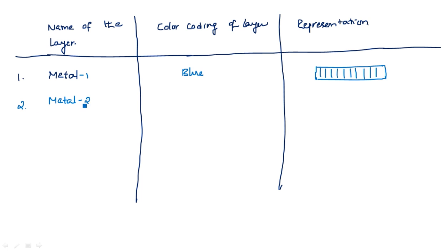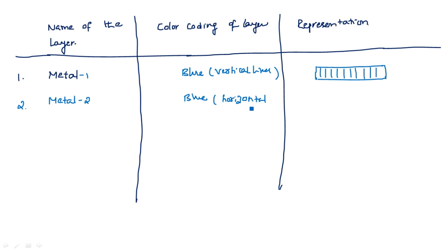The second is Metal 2, and we have metals up to Metal 7 or 8. What is the difference between Metal 1 and Metal 2? Metal 1 has very low resistance compared to Metal 2. Likewise, each metal has different resistance and capacitance values. Metal 1 is represented in blue color with vertical lines, and Metal 2 is in blue color with horizontal lines. The same colors we used in stick diagrams are used here, but in block representation.